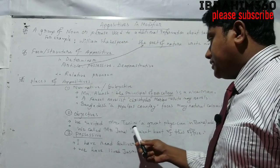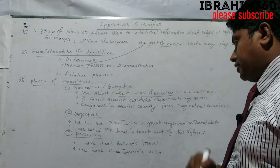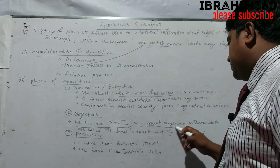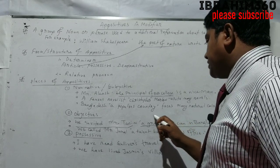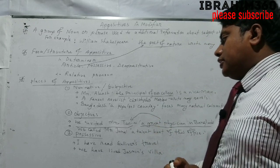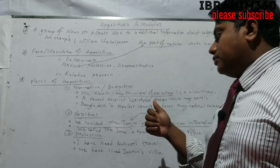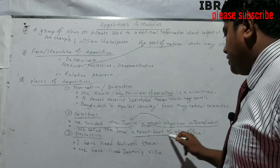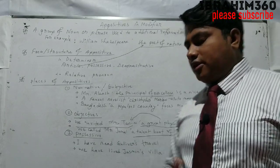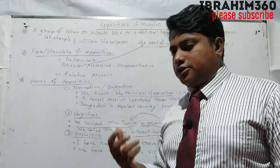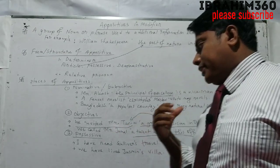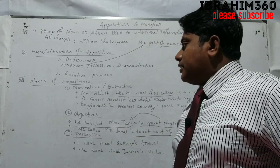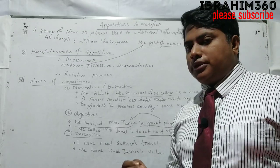We invited Mr. Tanim, a great physician in Bangladesh. Here 'a great physician' gives extra information about Mr. Tanim the object, so this is an objective appositive. We called Mr. Jamal, the talent of the talent hunt of this office — 'the talent of the talent hunt of this office' gives additional information about Jamal, which is the object. So this is also an objective appositive modifying the object.